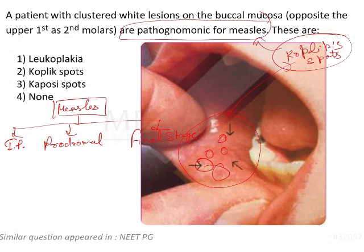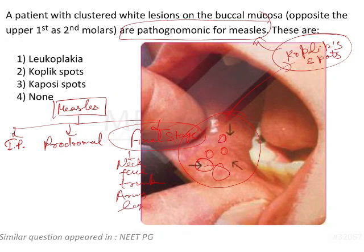In the final stage of measles, there will be involvement of the neck, face, trunk, hairline, arms, and legs, along with fever. The incubation period — the time from infection to first clinical symptoms — generally appears between 6 to 19 days.